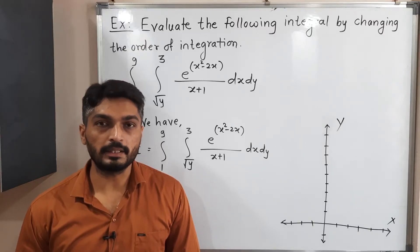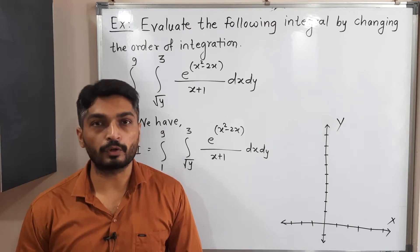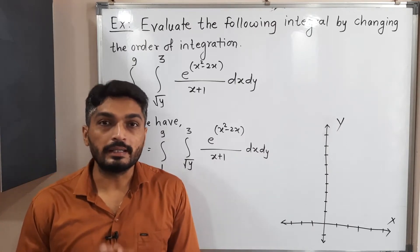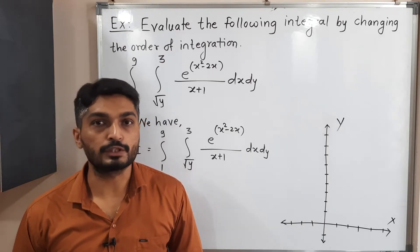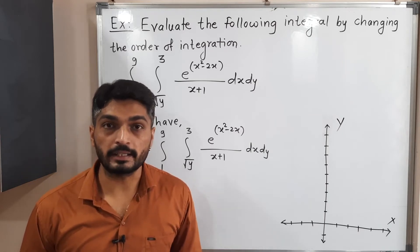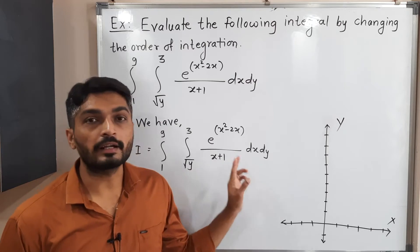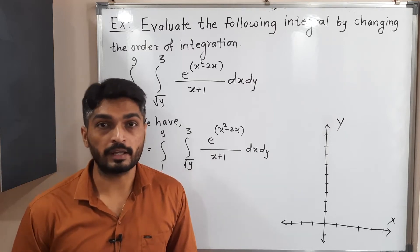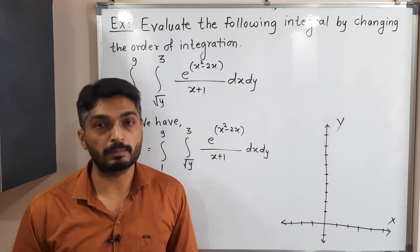In this example, we have to find a value of double integration by changing the order of integration. In the given integral, we have dx dy, meaning inner integration with respect to x and outer integration with respect to y. By rotating the strip by 90 degrees, we have to bring the inner integration with respect to y and outer integration with respect to x — that means instead of dx dy, we want dy dx. After doing that, we will solve the double integration.